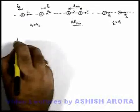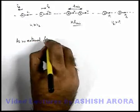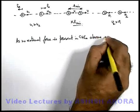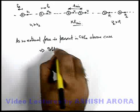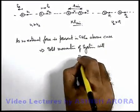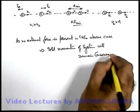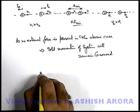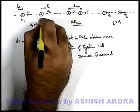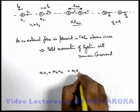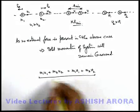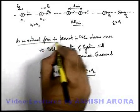Here we can state, as no external force is present in the above case, this implies the total momentum of the system will remain conserved. Total momentum of system will remain conserved. In this situation, the initial momentum was m1u1 plus m2u2 — that was the momentum of the system of two balls with masses m1 and m2. Finally the momentum will be m1v1 plus m2v2. This is the relation you need to use very carefully. So we can state that in a collision, total momentum of system always remains conserved, as no external force is present.